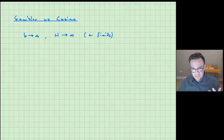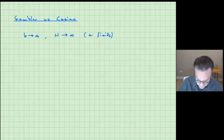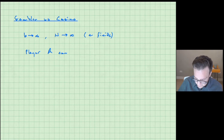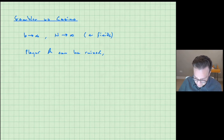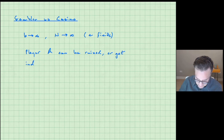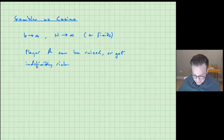If player B's budget is actually infinite, then player A can never really win — you can never ruin player B. But player A can still get ruined, much like anybody going into a casino losing all of their tokens. The alternative outcome instead of winning is that player A can just get richer and richer indefinitely — get indefinitely wealthy. So those are the two possible outcomes.